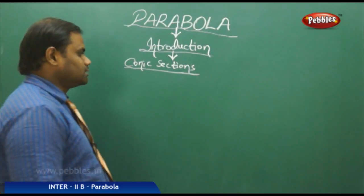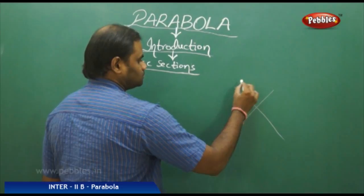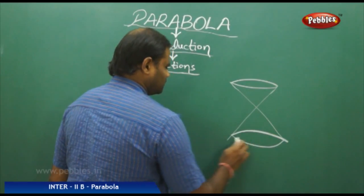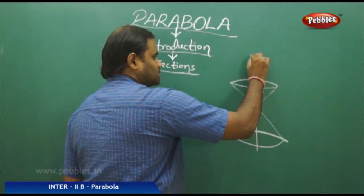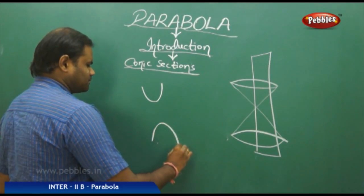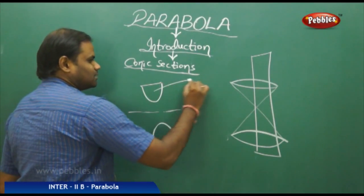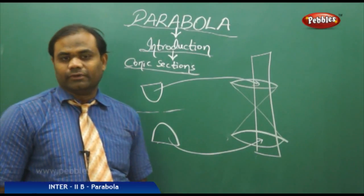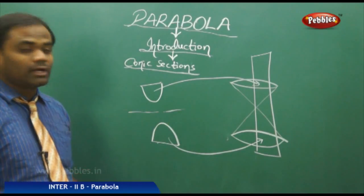Next, when I take a double cone and slice it twice — once on the top and once on the bottom with respect to the axis — I get a hyperbola. This two-part shape is what we obtain from the double cone, and we will discuss the conic section of the hyperbola in more detail later.